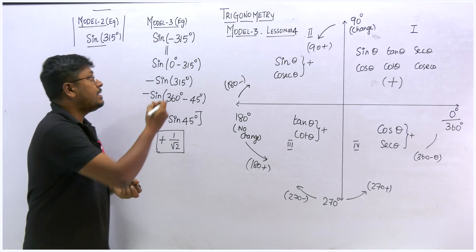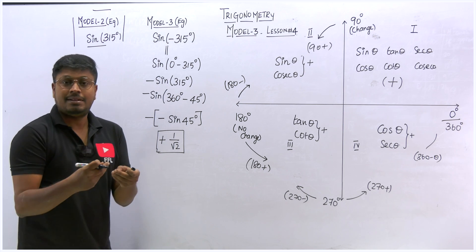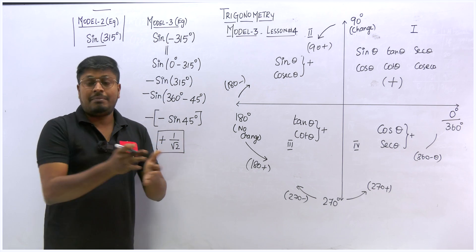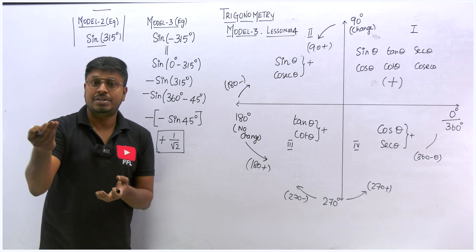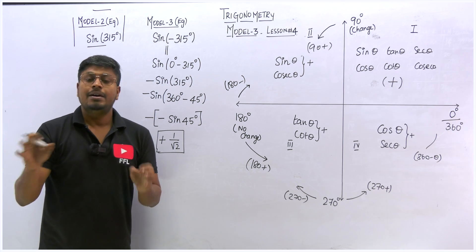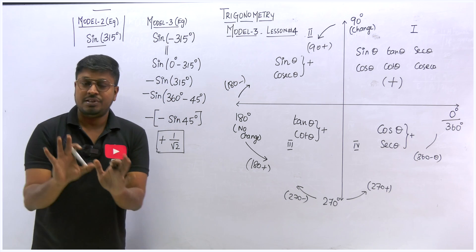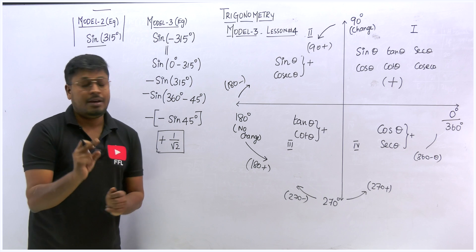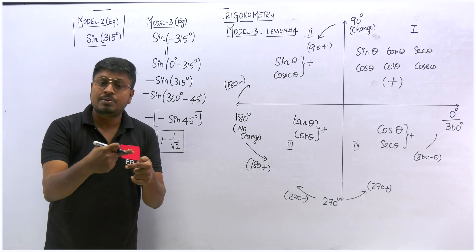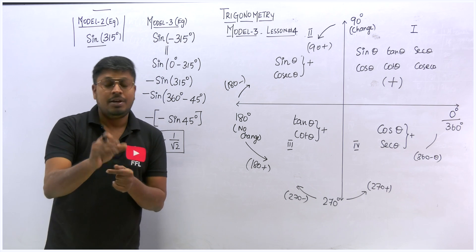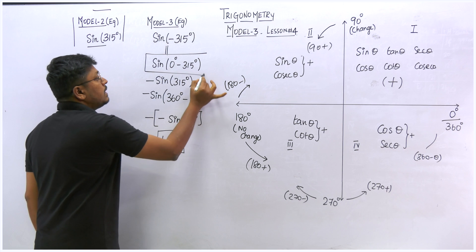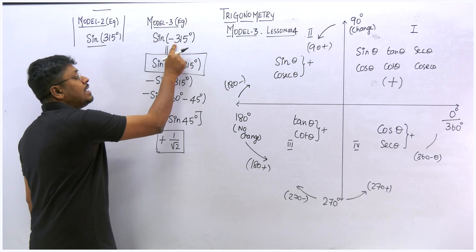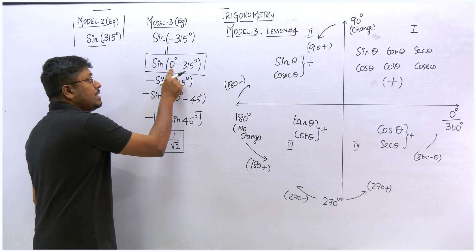Many teachers solve the same question in different ways. There are many methods to solve a trigonometry question — my method, your friend's method, your institution teacher's method — but the final target is the same answer. Learn any one method and apply it consistently to all questions. Do not learn a new method for every question — that is a waste of time. One method applied to all models will get you the answer.